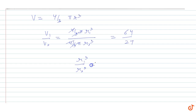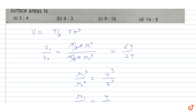Now, 64 is 4³ and 27 is 3³, so r1³ / r2³ = 4³ / 3³, which gives us r1 / r2 = 4/3.